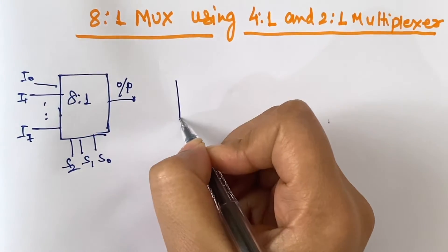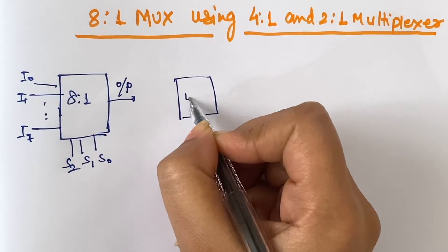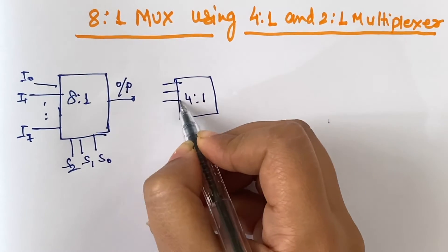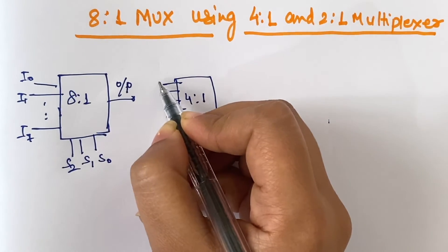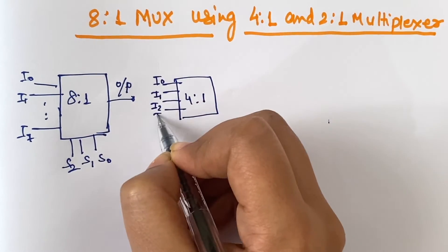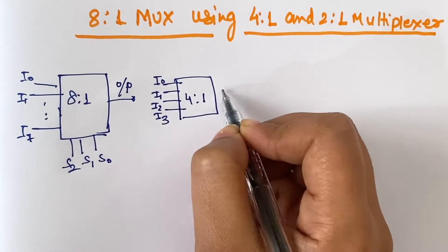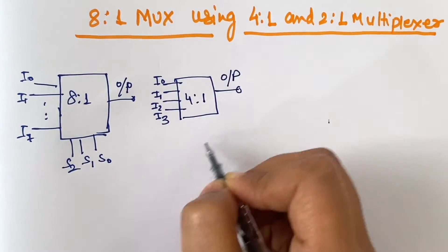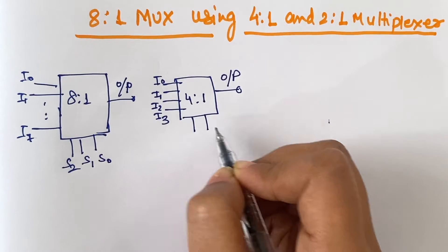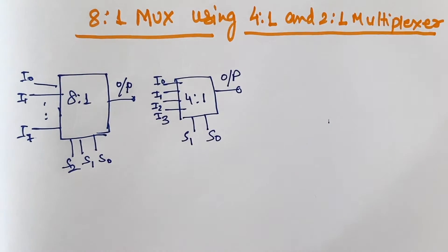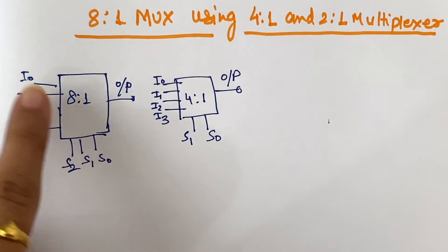For a 4-to-1 multiplexer, we have 4 input lines: i0, i1, i2, i3, and 1 output line, and 2 select lines: s1 and s0.